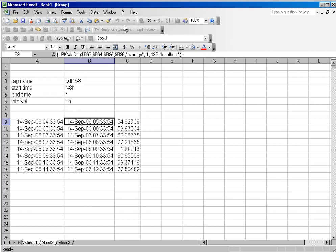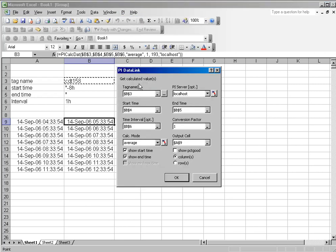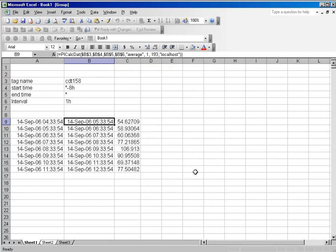One of the fields that we sort of ignored in our earlier discussion of calculated data was the conversion factor field. And in most cases, that will remain a 1. Let me take a few moments to explain what a conversion factor is.